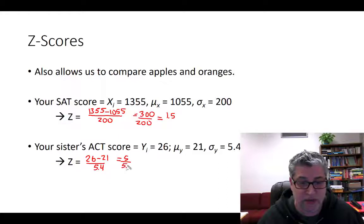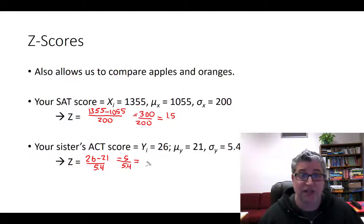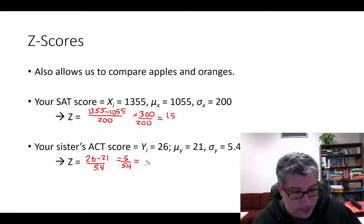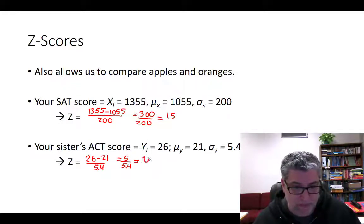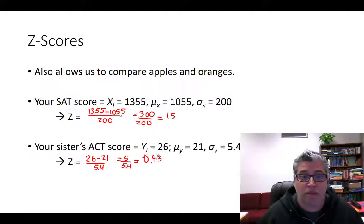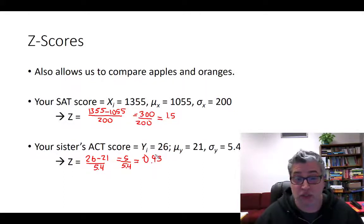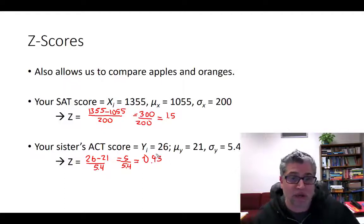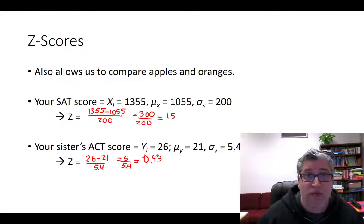So, when we denominate by 5.4 units, we get something that's a little bit lower than 1. As a matter of fact, it boils down to 0.93. So, you only did almost one standard deviation better than the average. Your sister did. You did 1.5. She only did 0.93. You did better than her. You get bragging rights.